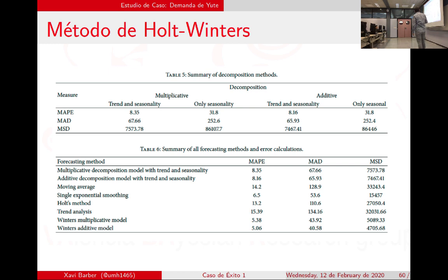Si hago un Holt-Winters tengo que definir alfa, gamma y delta, todas. Fijaros que aquí sí que hacen cosas raras: van del 6 al 5, vuelven al 6, bajan al 5. Necesitaría una super tabla para ver todo. Lo lógico es decirle al ordenador que encuentre el mejor método. Esto es ya el resumen final: tengo el modelo multiplicativo de Holt-Winters con tendencia y estacionalidad, el aditivo, la media móvil, el suavizado exponencial, el método de Holt, la regresión lineal, un Winters multiplicativo y un Winters aditivo teniendo en cuenta estacionalidad sin tendencia.